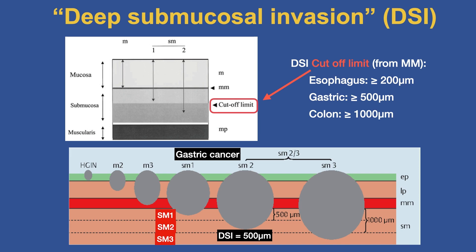If we're above that cutoff limit for DSI, we have a high likelihood of cure. But if we have deep submucosal invasion, the risk increases. This cutoff limit will differ depending on which organ we're in and what kind of cancer we're dealing with — whether it's squamous cell cancer in the esophagus or adenocarcinoma.